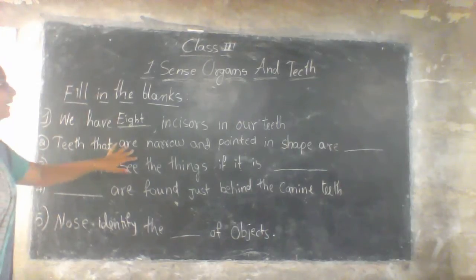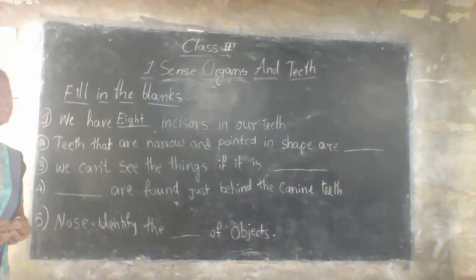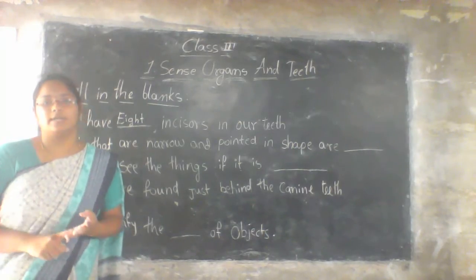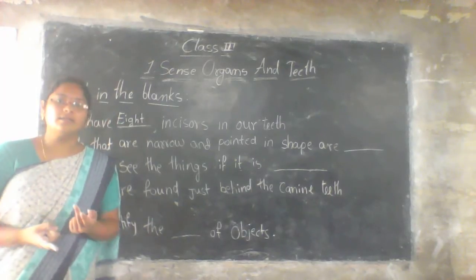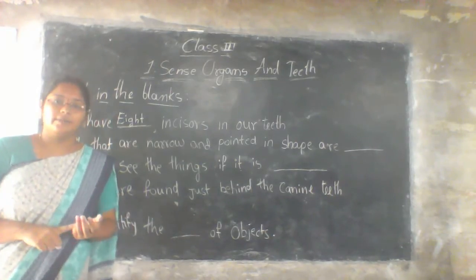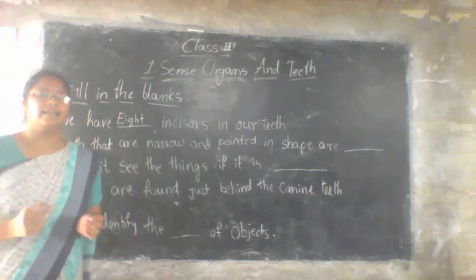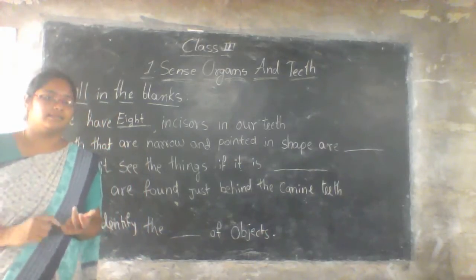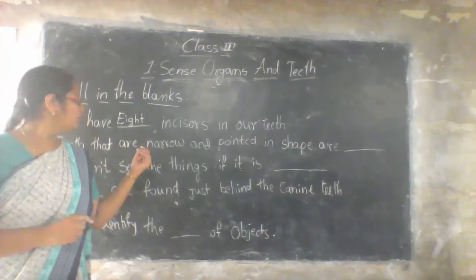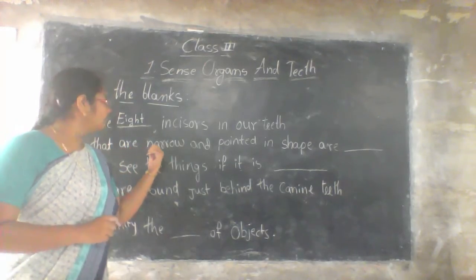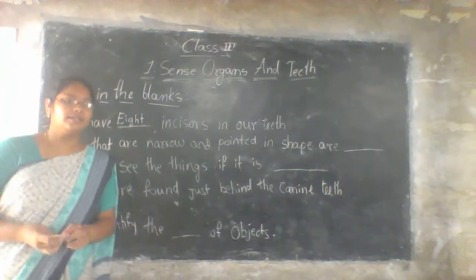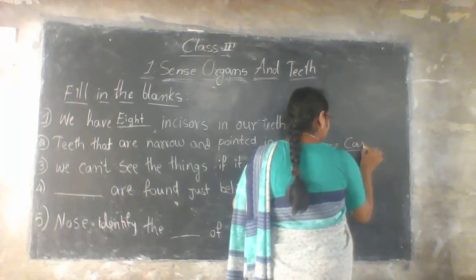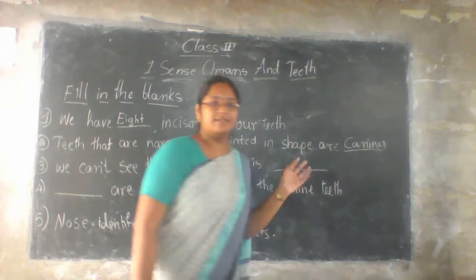Next one: teeth that are narrow and pointed in shape. How many types of teeth are there? Four types: incisors, canines, premolars, and molars. Incisors are the cutting teeth. Narrow and pointed teeth that are used for tearing — those are called canines. Canines are the narrow and pointing teeth.